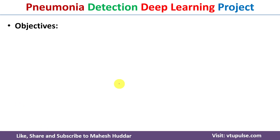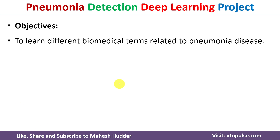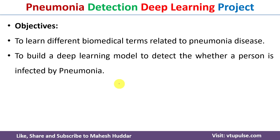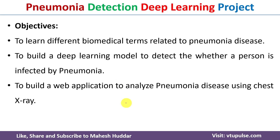The objectives of the project are: to learn the different biomedical terms related to pneumonia disease, to build a deep learning model to detect whether a person is infected by pneumonia, and to build the application using the Flask library.